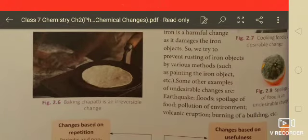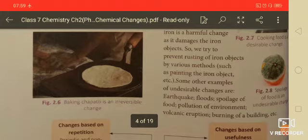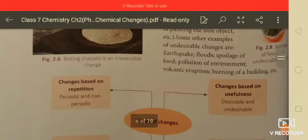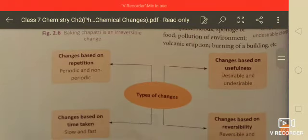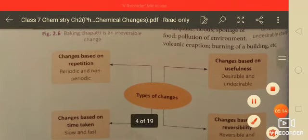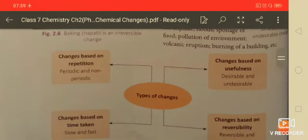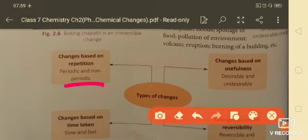So when you study changes based on repetition, those are called periodic changes. Changes based on usefulness are desirable changes. Reversible changes take their original position after change. And changes based on time taken are slow or fast changes.